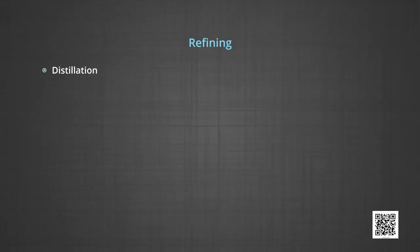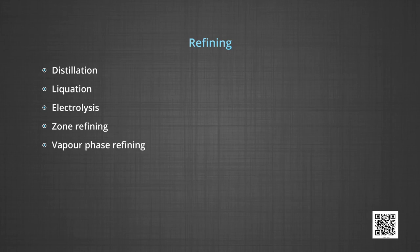For obtaining metals of high purity, several techniques are used depending upon the difference in the properties of the metal and the impurity. Some of them are distillation, liquation, electrolysis, zone refining and vapor phase refining. Now, let us understand these methods in detail.